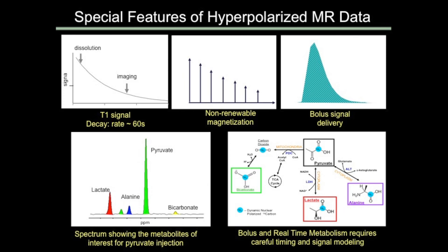The first compound decided to be injected was pyruvate. Depending on the biological needs of the tissue, pyruvate can get converted in the mitochondria and go through the TCA cycle, or it can get converted into lactate in circumstances where we have anaerobic metabolism, or it can get converted into alanine. When you make a measurement — a spectral decomposition of the carbon-13 signal — you can see various peaks, each corresponding to a different compound. The relative intensities of these peaks tell you how much of that compound is there. For the carbon-13 compound, we're able to see fairly distinct peaks that can be followed.